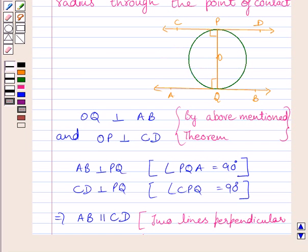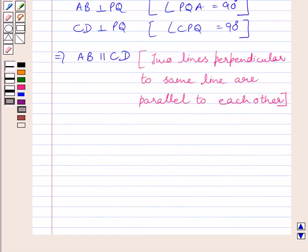And tangents touching the end points of the diameter will be parallel to each other. So we can write a circle can have two parallel tangents at the most.